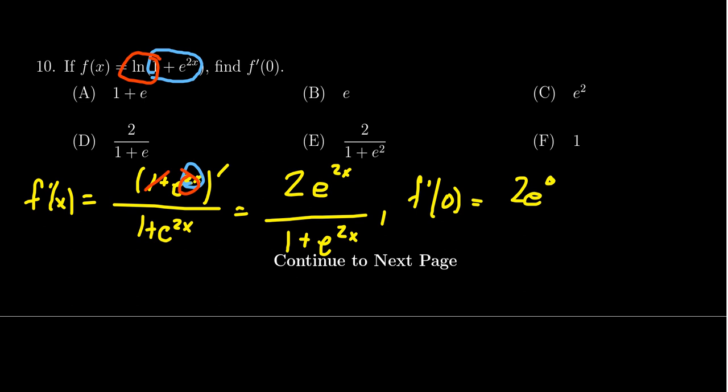we get 2 times e to the 0 over 1 plus e to the 0. e to the 0 is 1, so we get 2 over 1 plus 1, which is 2 over 2, which gives us 1. So we see the correct answer is F, number 1.